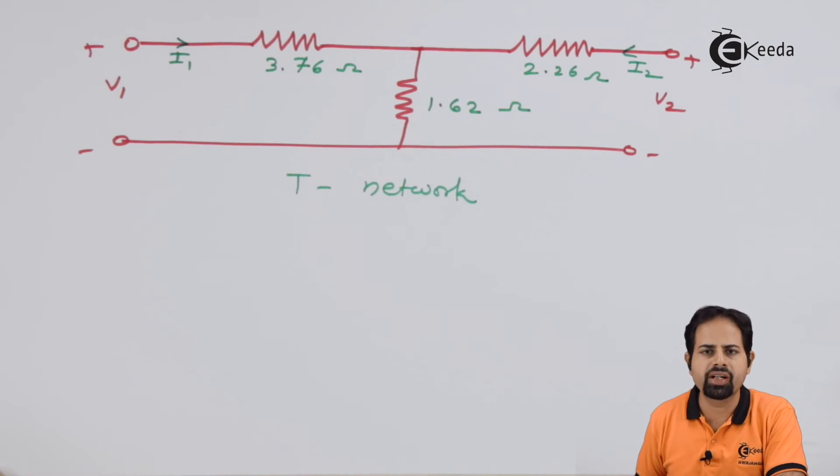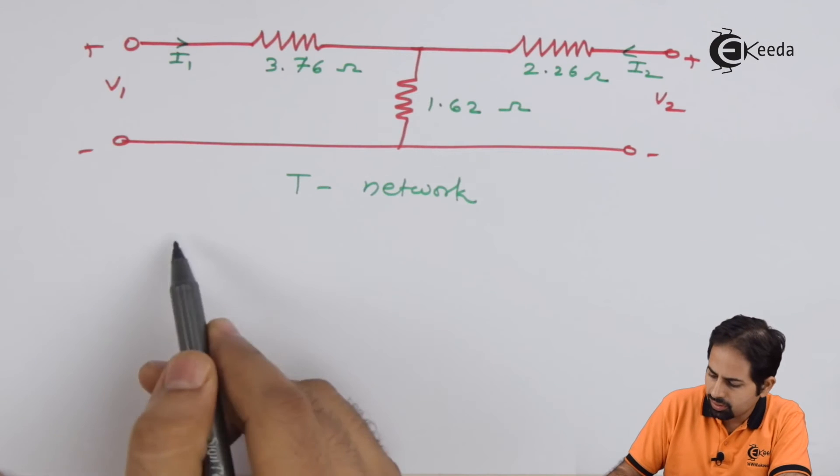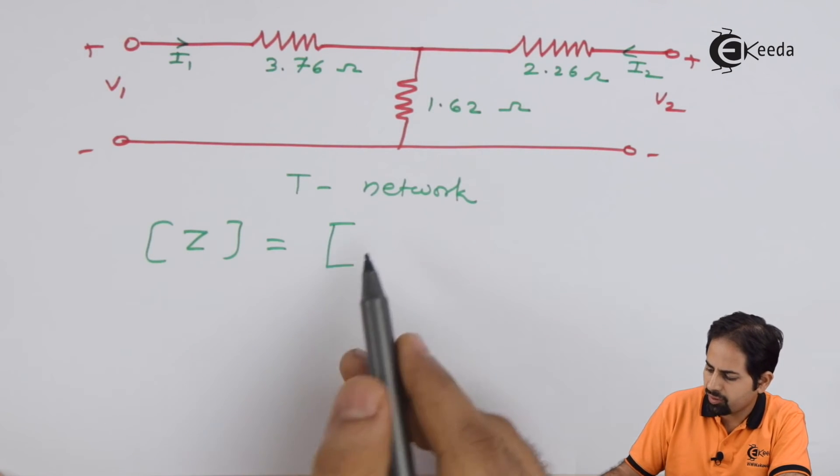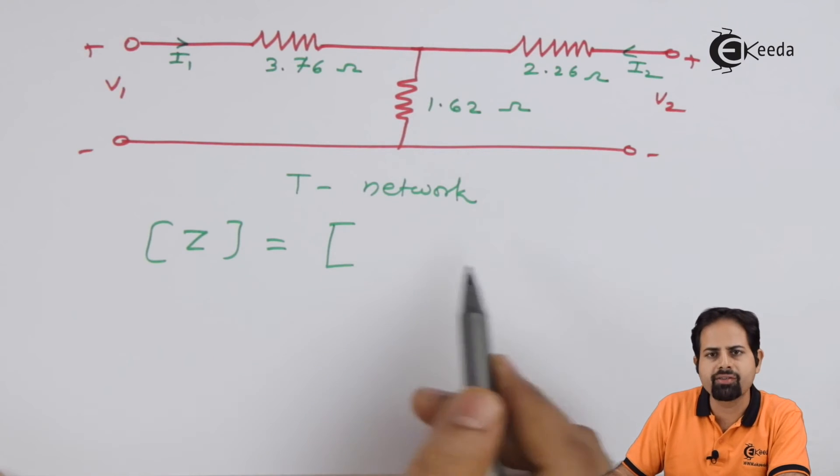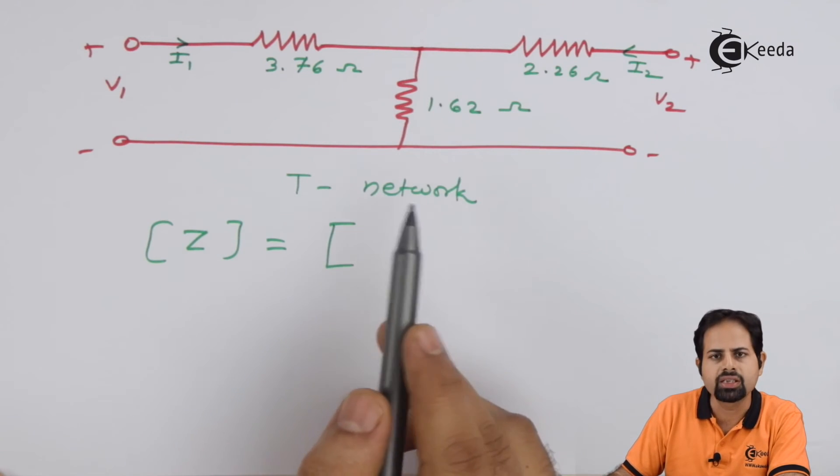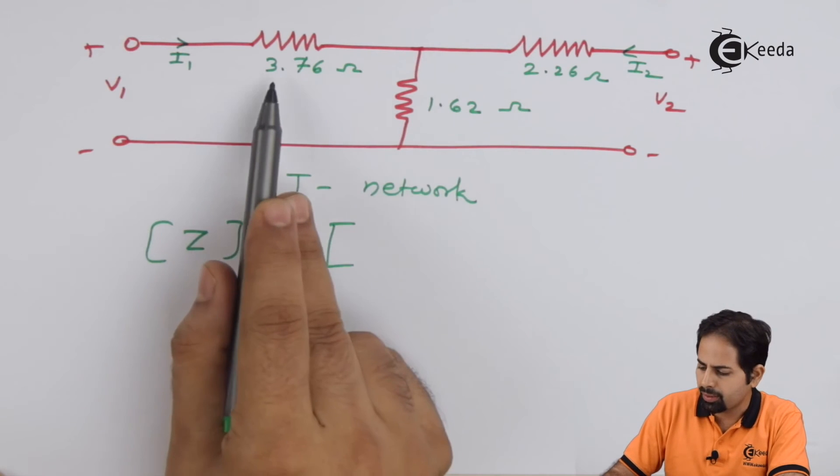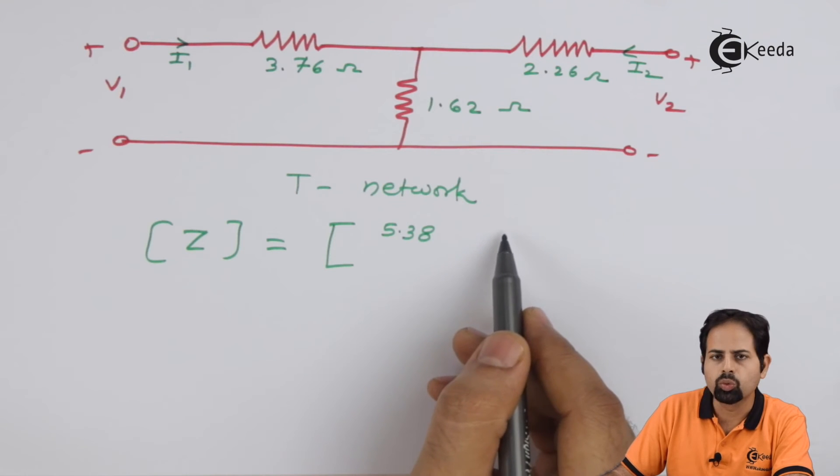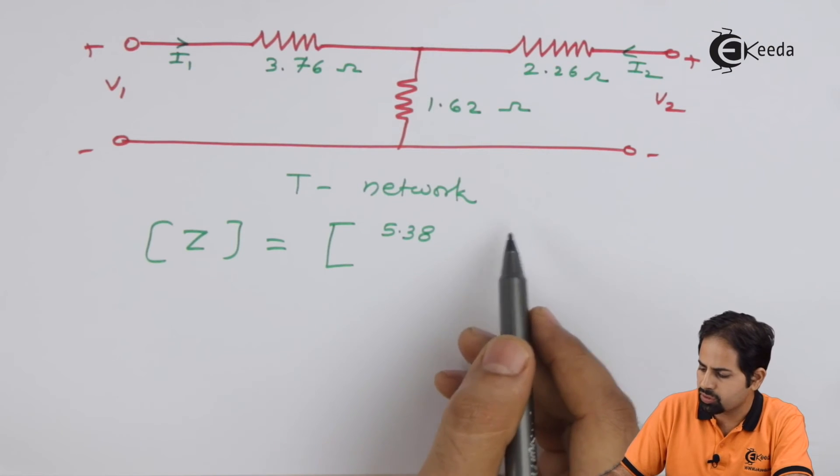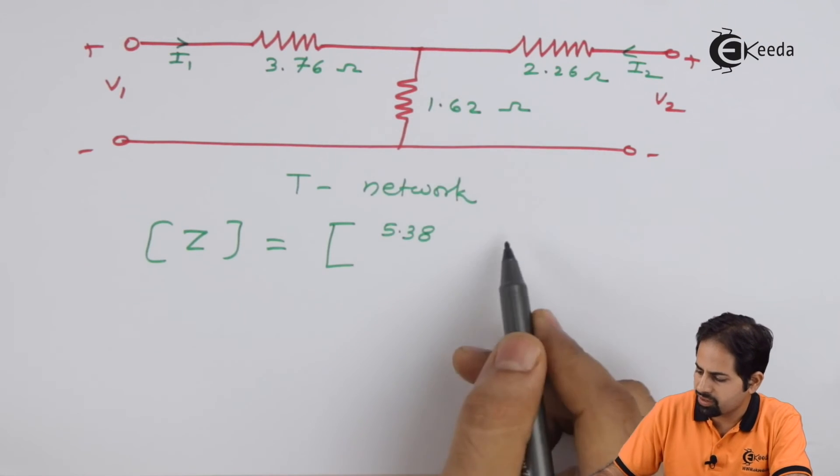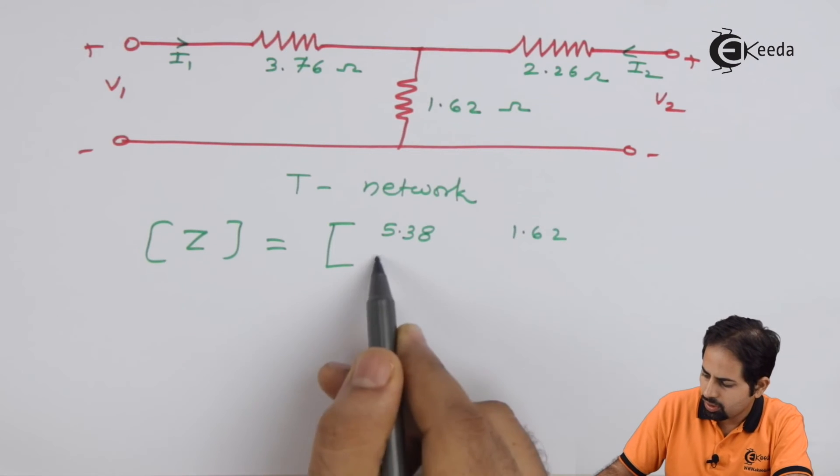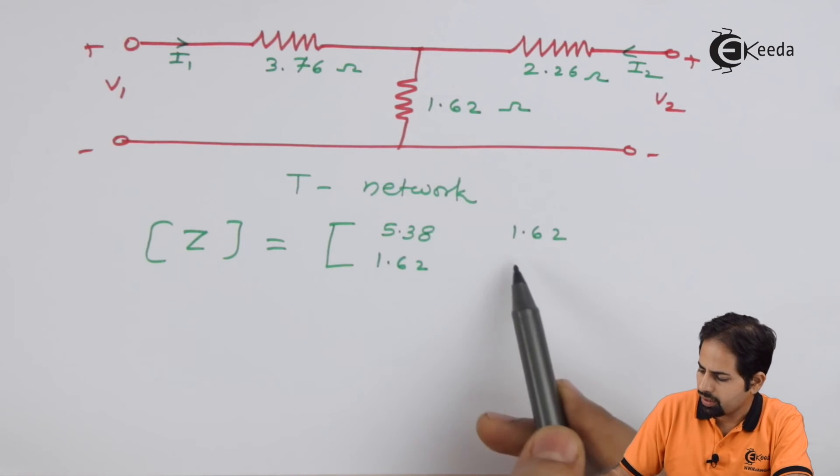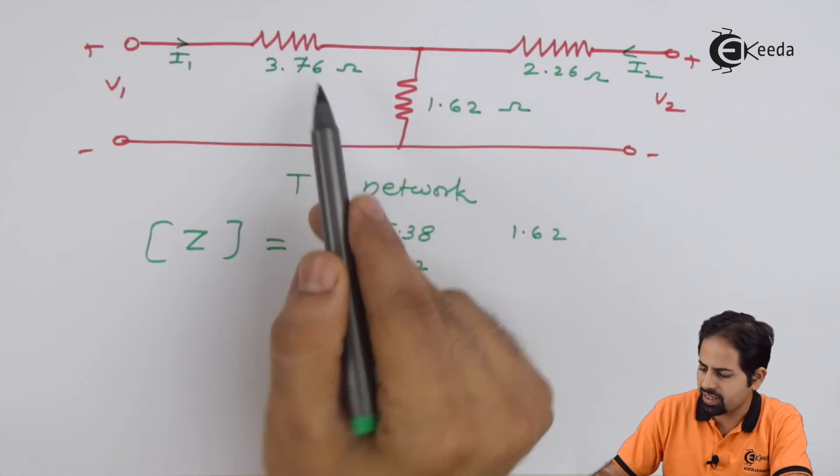And for T network, it is convenient to write Z parameters. So we will write Z parameters for a given network. So first is Z11 and we know that Z11 is ZA plus ZB, that means 3.76 plus 1.62. Then there is Z12, which is equal to ZB, that is 1.62. Here also 1.62, Z21 and this will be ZB plus ZC, this is ZA, let us say. This is ZA, we have seen the derivation.